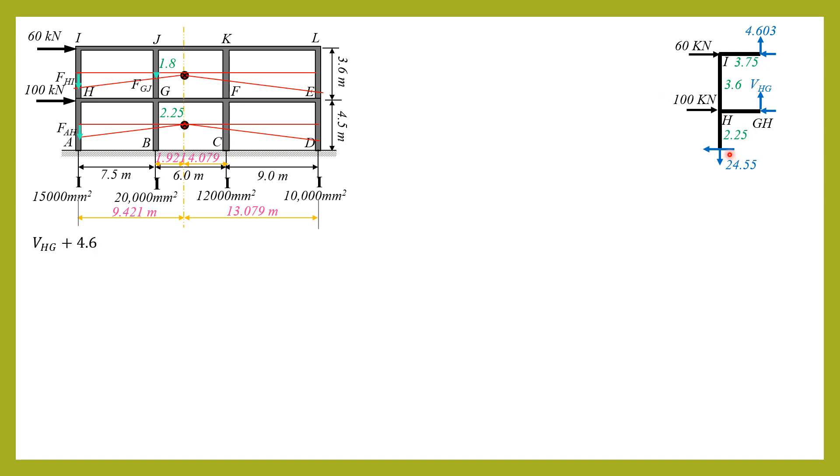So summation moment about this point equals 0, or summation forces y rather to solve for vhg. So vhg plus 4.603 equals 24.55, where 4.603 is equal to force axial force in hi. So if we do the free body diagram of this, if hi is downward 4.603, that's why that's also 4.603. So shear in hc can now be computed. It is equal to 19.95 kilonewtons, so it's very close to portal method 20 point something I think.